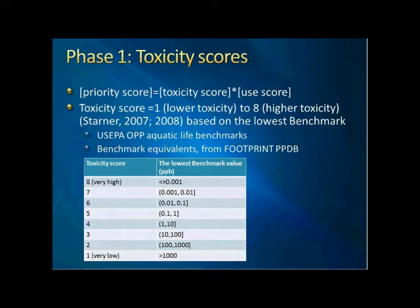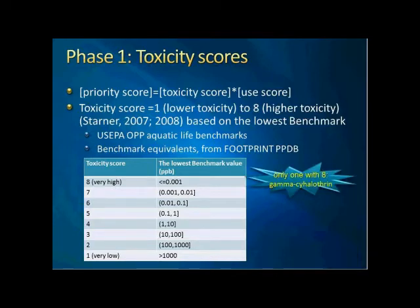This table shows the definition of the toxicity scores. The very low toxicity score of one is assigned to pesticides with the lowest benchmark value greater than 1,000 ppb. The highest score of eight is assigned to those with a toxicity value less than 0.001 ppb. Only one chemical is currently associated with the highest score of eight, which is gamma-cyhalothrin. The advantage of this system is that in the future, if we have more pesticides with even higher toxicity, we can just extend this number.